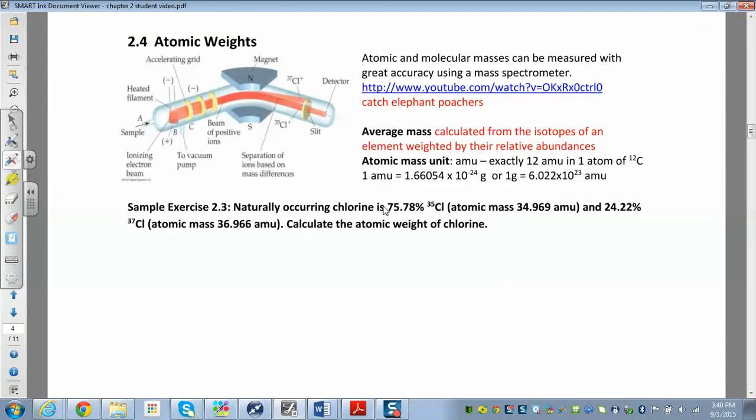So here we have naturally occurring chlorine is about 75.78 percent chlorine-35, and this is the atomic mass of chlorine-35. And then the rest of it, 24.22 percent, is chlorine-37, which has an atomic mass of 36.966. So right away,